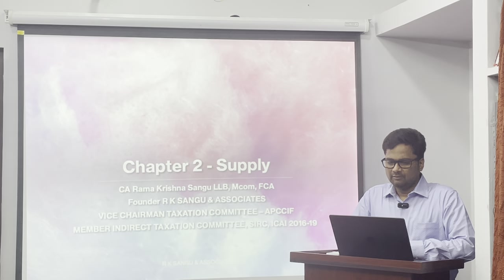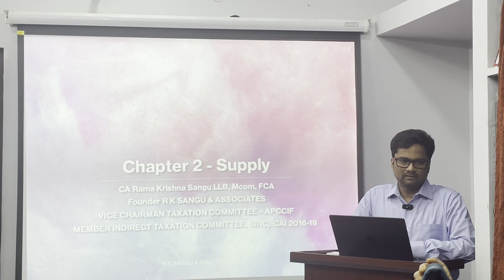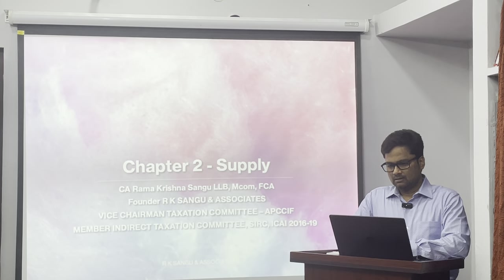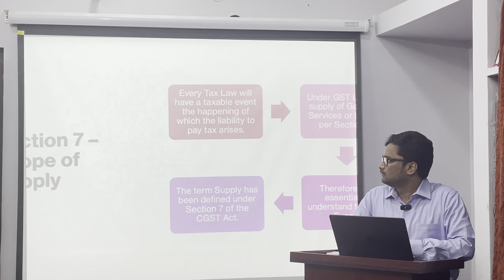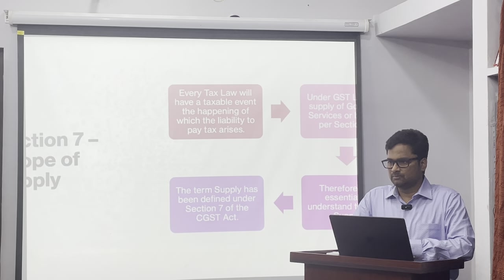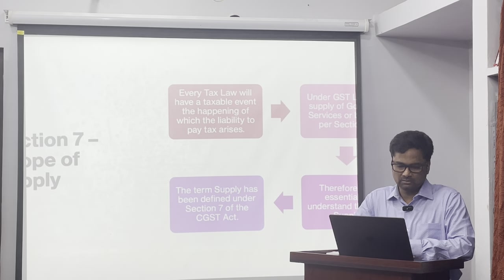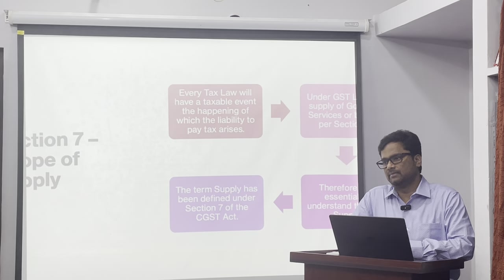In session 2, we discussed and started discussing the scope of supply under Section 7. This definition is so important because what is taxable under the GST law is supply of goods or services or both. Scope of supply of goods or services or both is the taxable event. Whenever there is a supply of goods or services or both, GST has to be paid. We are understanding as per Section 7 what is meant by supply of goods or services.